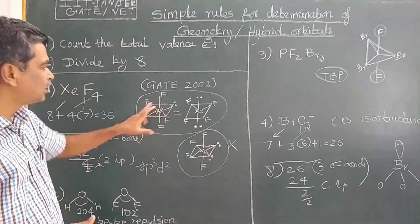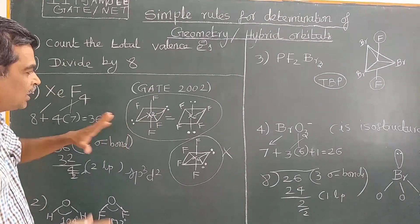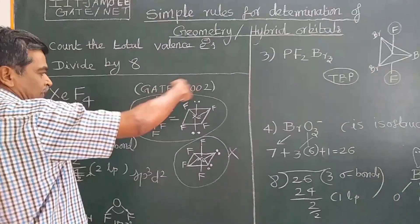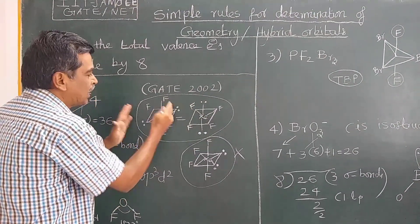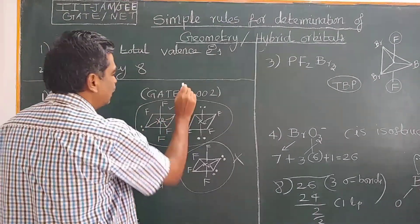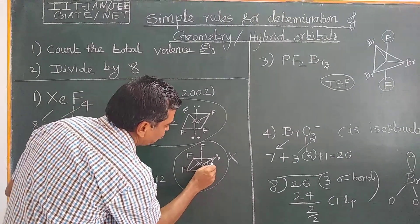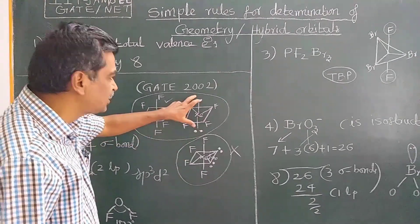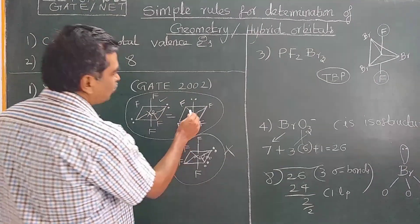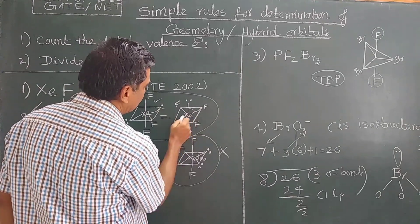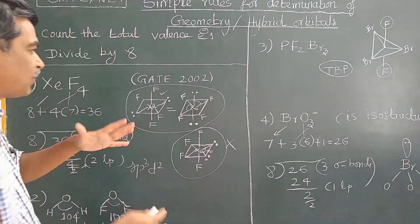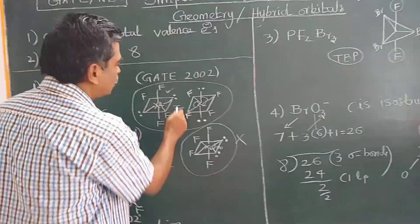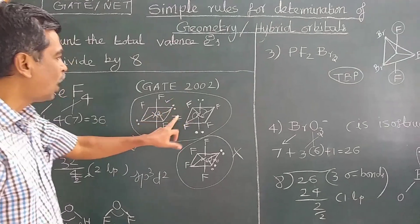XeF4 has two lone pairs. Since lone pair–lone pair repulsion is greatest, the two lone pairs are placed in the axial diagonal positions to minimize repulsion, giving a square planar molecular geometry. Placing both lone pairs in equatorial positions would give 90° lone pair–lone pair repulsion, which is not possible. Therefore the square planar structure is the correct geometry for XeF4.